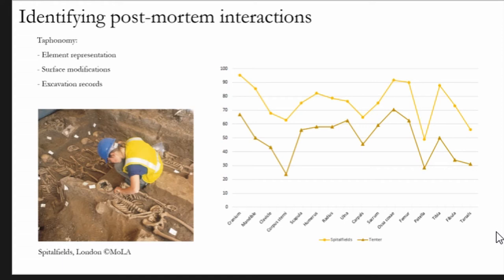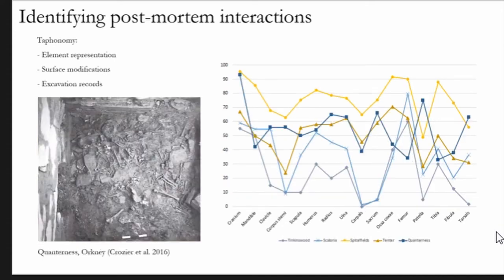So this takes the minimum number of elements for each skeletal element in the body and calculates it against the total number of expected elements if the minimum number of individuals in a context were to be present and fully represented. What we can see here is that for sites with primary deposition, such as Spitalfields and Tenta, you get quite a high representation of most elements in the skeleton except for those with a lot of trabecular bone which are nearly always underrepresented. Then when we look at Neolithic sites with really complex collective deposition, multiple forms of deposition happening in the same space, you get a really irregular, uneven, unpredictable representation of all elements of the skeleton.